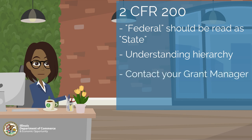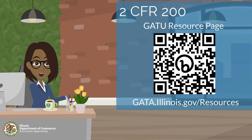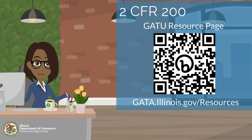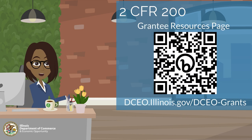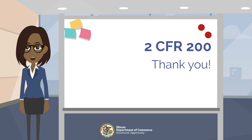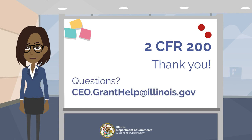Contact your grant manager with questions regarding 2CFR 200 grant regulations. You can learn more about 2CFR 200 and other grant-related topics by visiting the GATU resource page at gata.illinois.gov/resources. GATU stands for Grant Accountability and Transparency Unit, which is part of the Governor's Office of Management and Budget, also known as GOMB. You may also visit the grantee resource page by scanning the QR code with your mobile device or by visiting dceo.illinois.gov/dceo-grants. Thank you for watching this presentation on 2CFR 200. If you have any questions, please contact ceo.granthelp@illinois.gov.